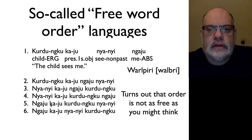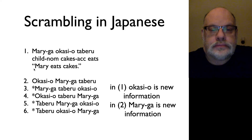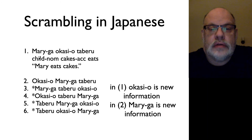So let's take a look at this with a language where we have a lot more data, which is Japanese. And Japanese allows a certain freedom of word order. You can have the order S-O-V, where ga is the nominative marker marking subjects and o is the accusative marker marking objects. And that's a grammatical sentence. You can also reverse the order of those, so you can actually have O-S-V.